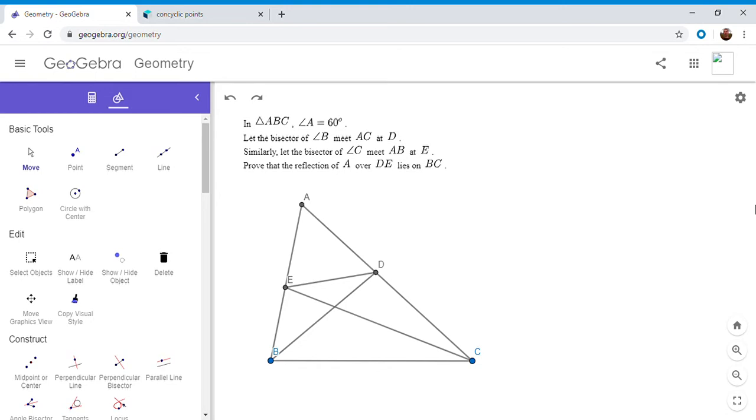Now I'm going to go over the solution. We have a triangle ABC with angle A equal to 60 degrees. The bisector of angle B meets side AC at D, and the bisector of angle C meets side AB at E.